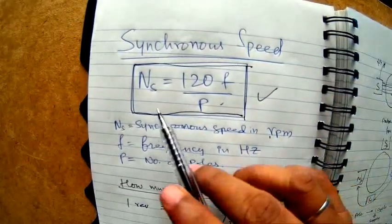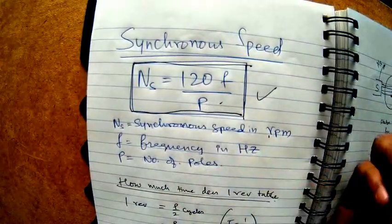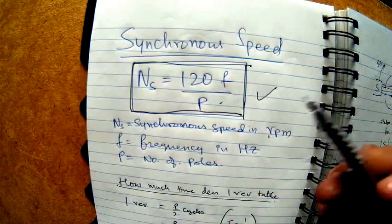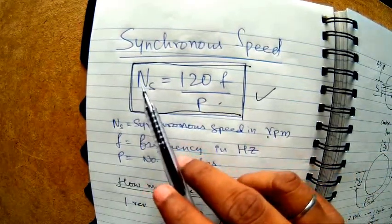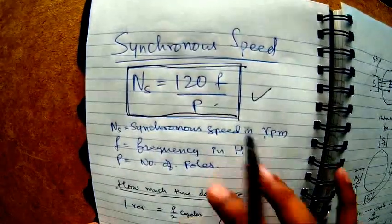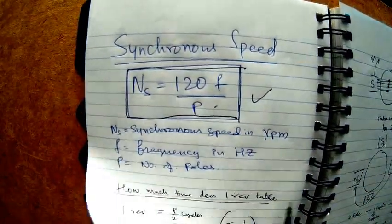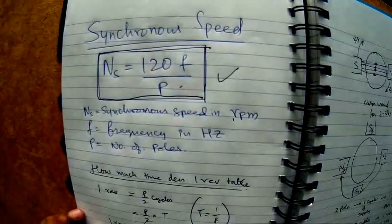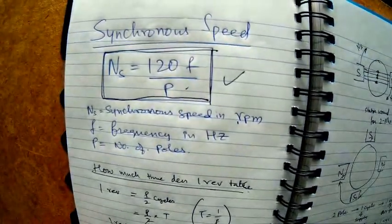This is a very famous formula: NS = 120f/P is as important as Ohm's law. This is the speed of the synchronous magnetic field, 120f by P. We'll see more in the further videos.